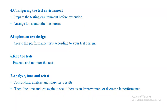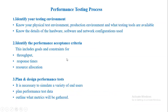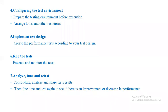If any changes improve performance, we keep them; if performance decreases, we revert to the previous model. So the full performance testing process is: identify the test environment, identify the performance acceptance criteria, plan and design, configure the environment, implement the test design, run the test, and finally analyze, tune, and retest.